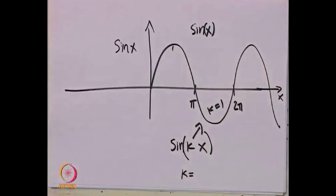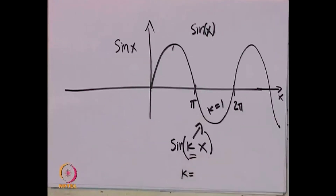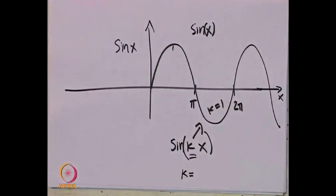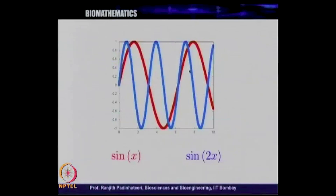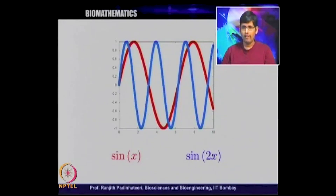Either you can show this shape and people will understand, or you can say that it is a sine wave with k equal to 1, and then also people will understand. So there are two ways of telling people: either you can just show the function by plotting it, or you can just say that it is a sine wave with k equal to 1. What we have plotted is the red color is sine x, and the blue color is sine 2x. Here k is 1, here k is 2.